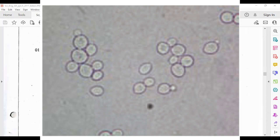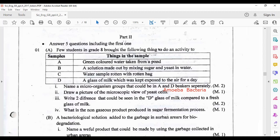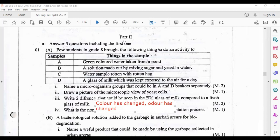Question number three: write two differences that could be seen in D glass of milk compared to a fresh glass of milk. You can write two differences because in D it has spoiled, so you have to write the features of a spoiled milk. Write color has changed, and odor has changed.